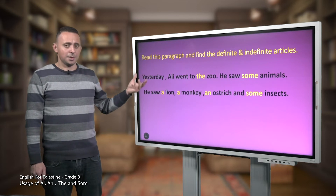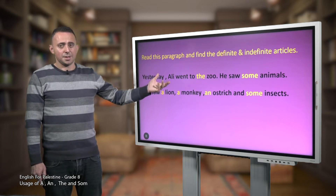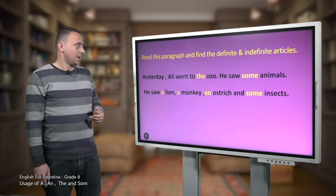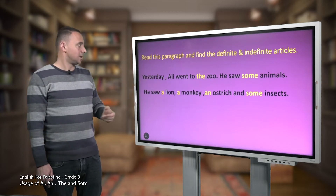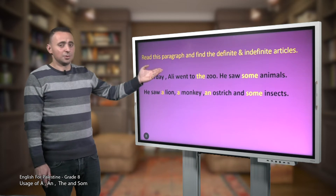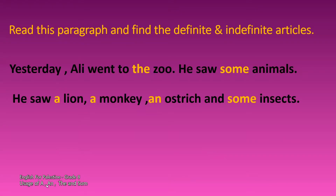Notice, dear students, the words in yellow are definite and indefinite articles. The zoo — 'the' is a definite article. Some animals — we have 'some'. A lion, a monkey, an ostrich, some insects.